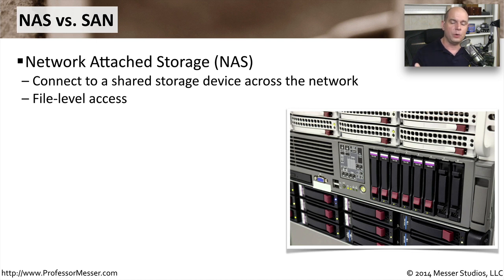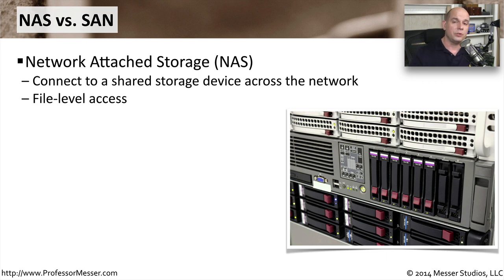One is network-attached storage, or NAS. NAS storage is storage that is outside of our device — we're connecting to it across the network. But we access the data on that storage at a file level. If we need to change just part of a file, then we have to overwrite the entire file on that storage device. Likewise, if we need just a little bit of data out of a file, we have to retrieve the entire file from that device to be able to work with it.